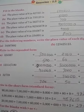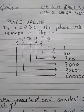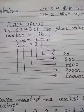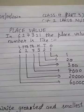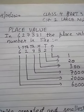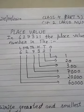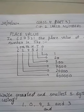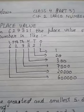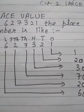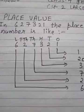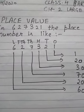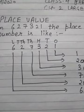So we are going to learn about place value. As you all know already about place value, place value is basically the place of a single digit in the given number. So here in 627321, six digits are given. First of all, what you have to do is write the place value of every digit over it.